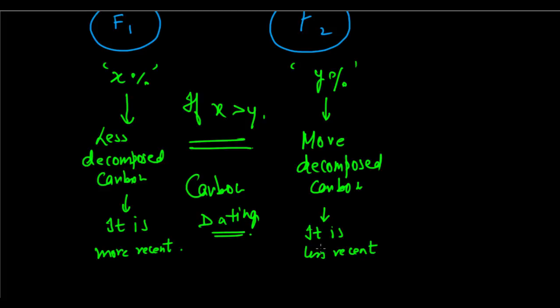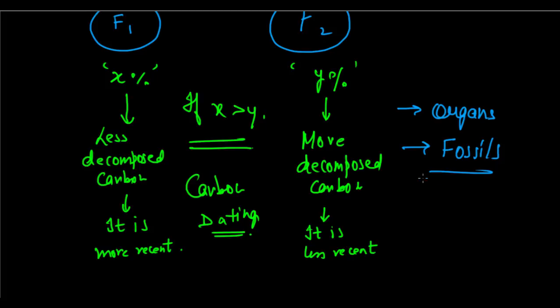To summarize, to trace evolutionary relationships we look at two things mainly: first is organs — using homologous and analogous organs as evidences — and second is fossils, through fossil dating and carbon dating. These are the two things we look at for determining evolutionary relationships.